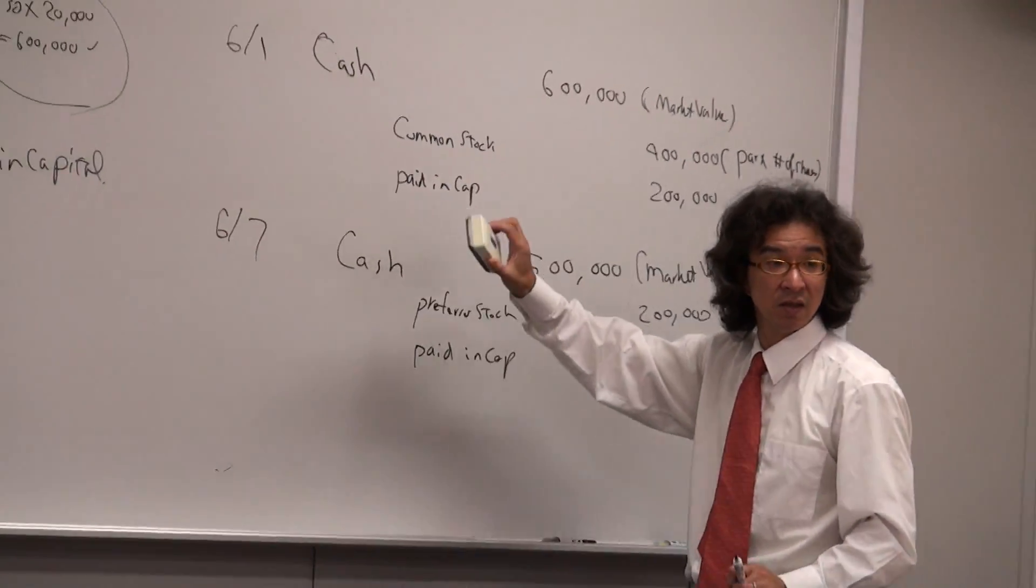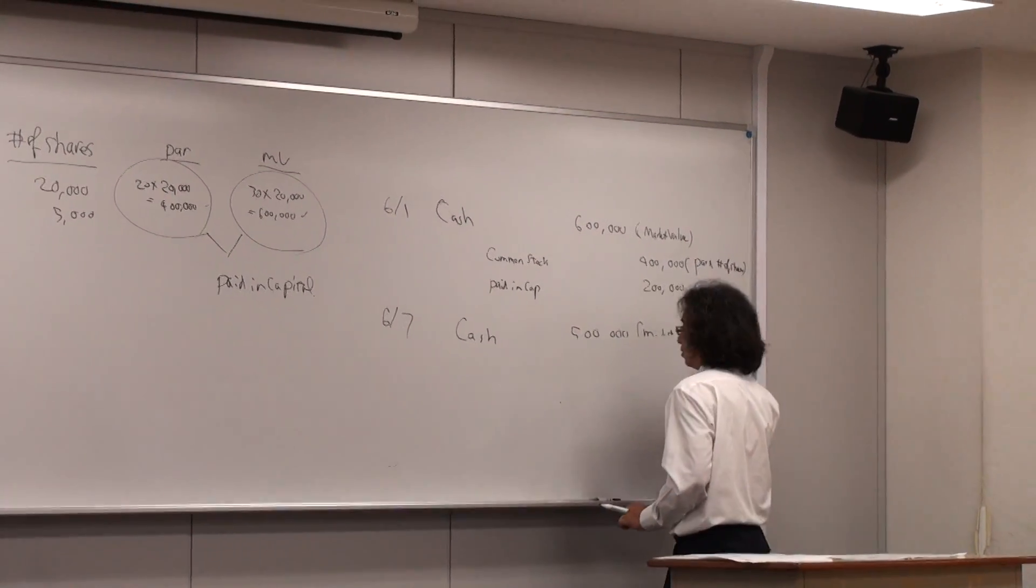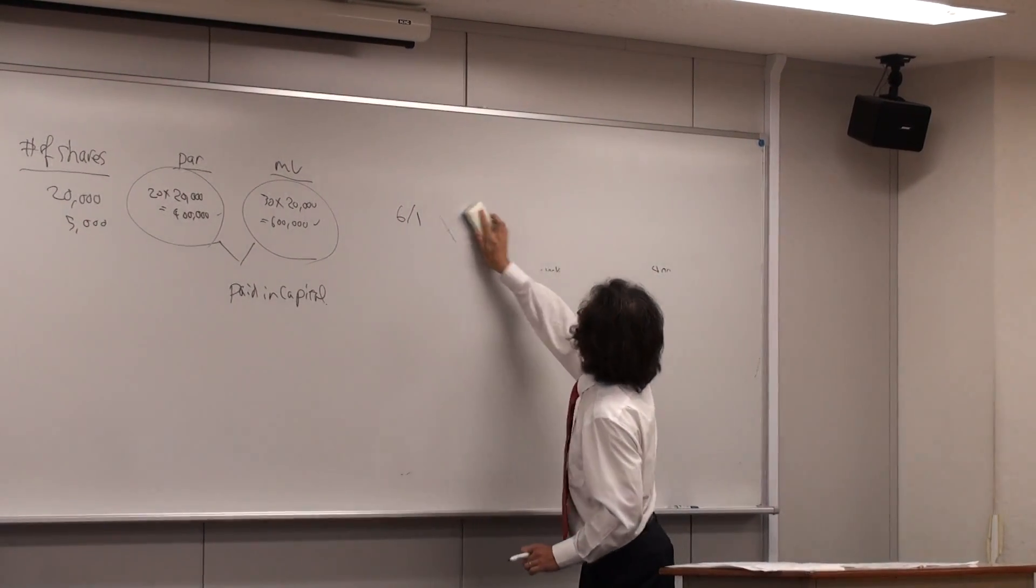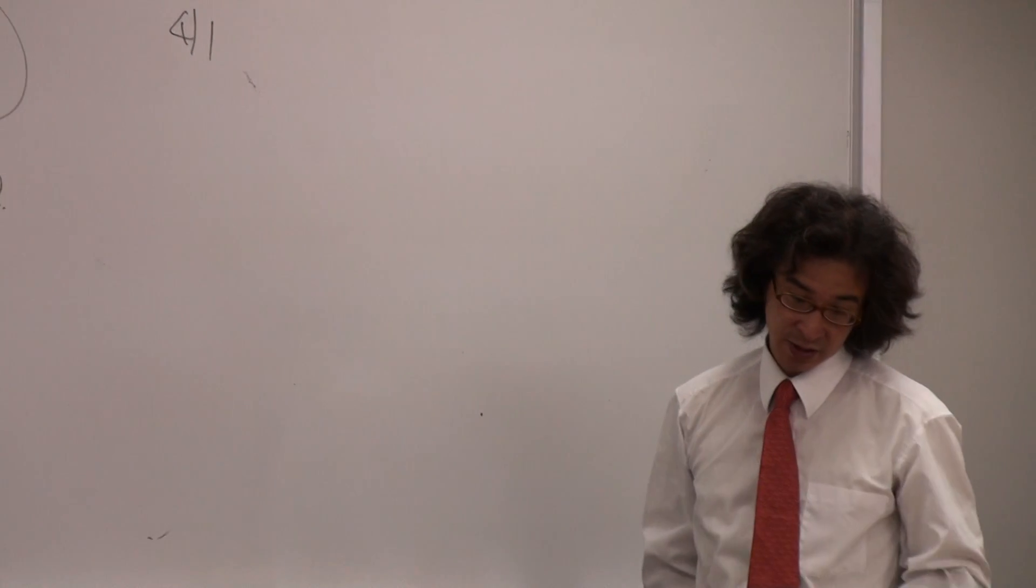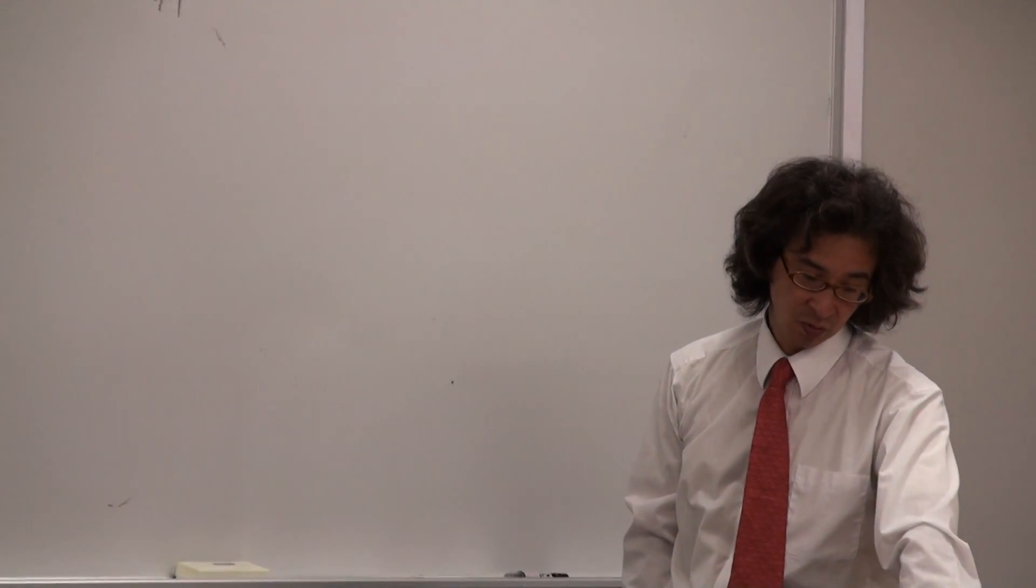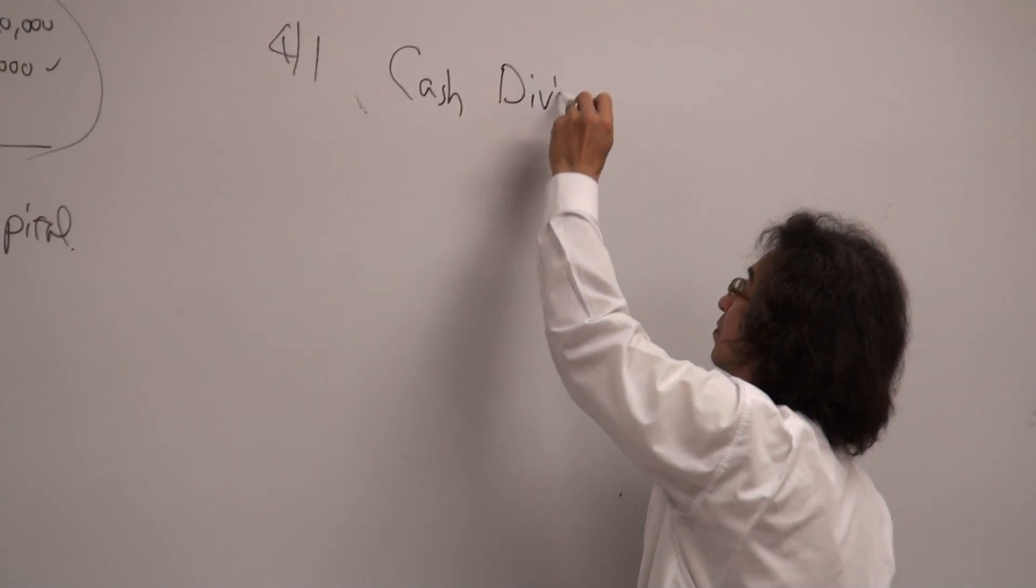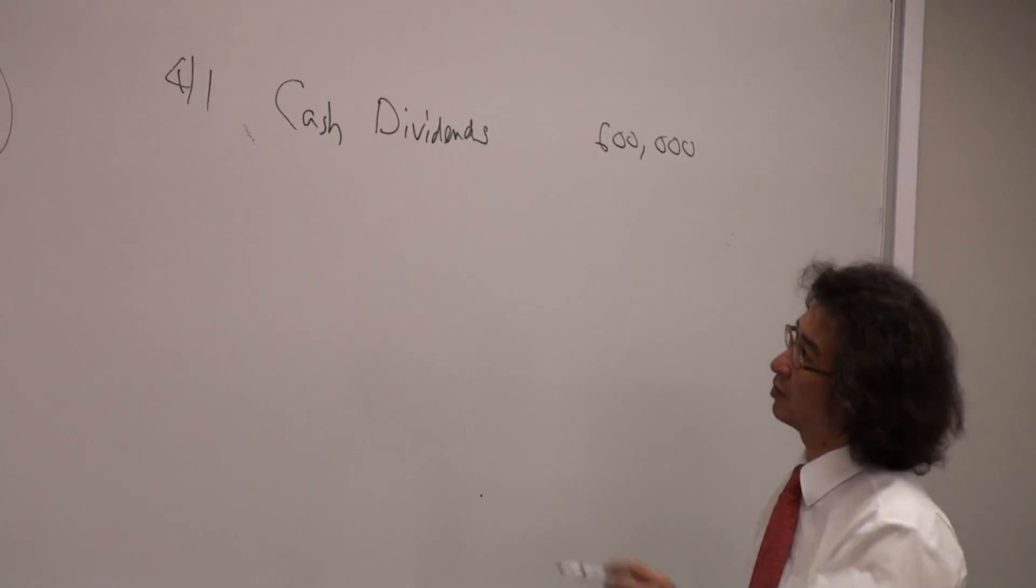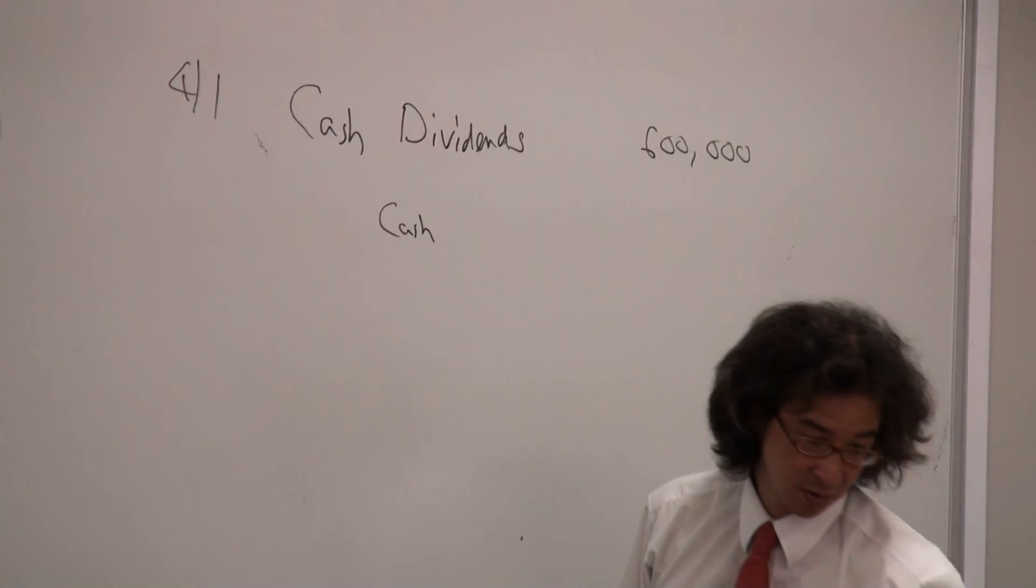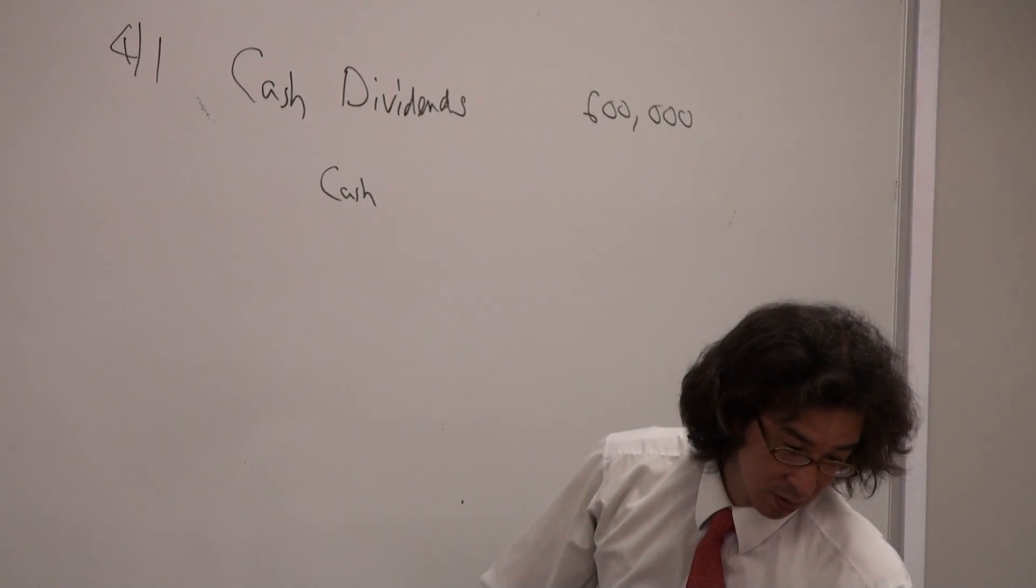Do you have any payments here? So it's on April 1st. They say we pay dividends. What is going to happen to the entries? Okay. Yes. How much? Six hundred thousand dollars.